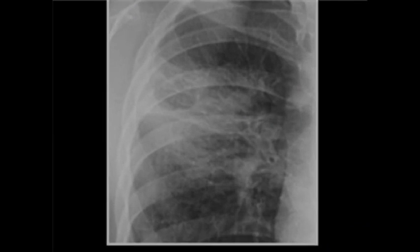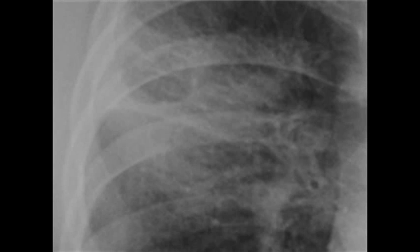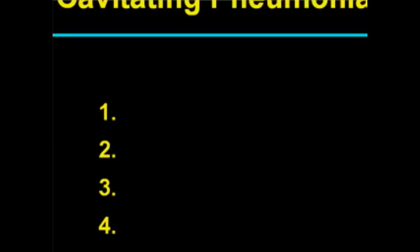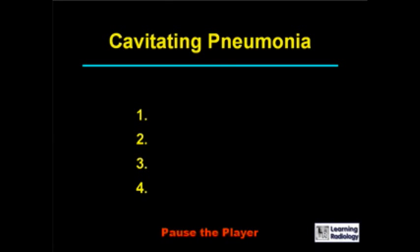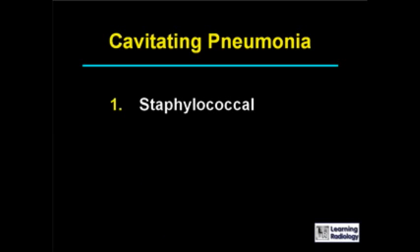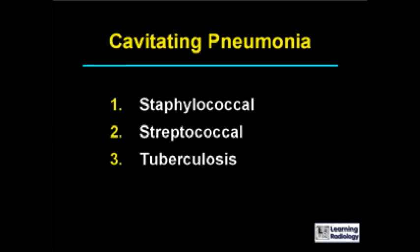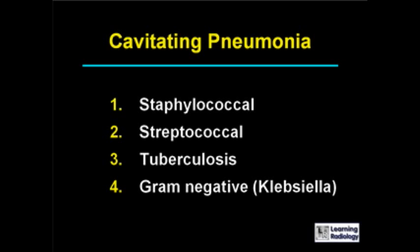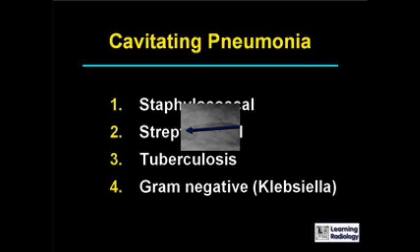The next differential is for a cavitating pneumonia. There are four causes: staphylococcal, streptococcal, tuberculosis, and gram-negative pneumonias such as Klebsiella.